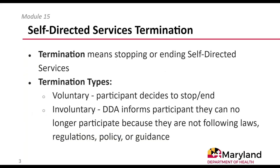Self-Directed Services Terminations means stopping or ending Self-Directed Services. There are two types of terminations. Voluntary Terminations are when a participant decides they no longer want to self-direct their services, meaning the participant will receive services from a Medicaid-enrolled provider. Involuntary Termination is when the DDA informs the participant that they no longer can participate in Self-Directed Services because they are not following the laws, regulations, policy, or the Self-Directed Services guidance.